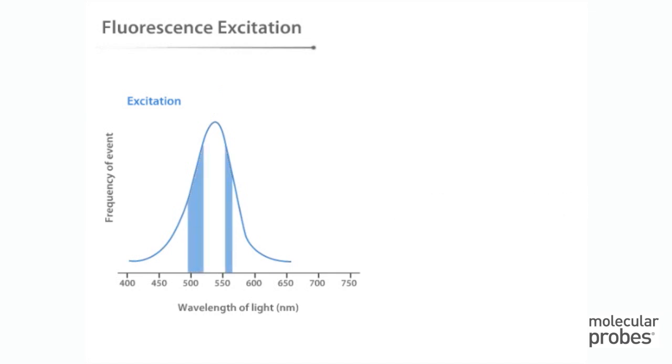Light with a wavelength near the excitation maximum can also cause excitation, as shown by the shaded areas, but it does so less efficiently.